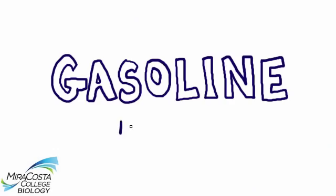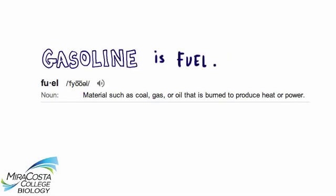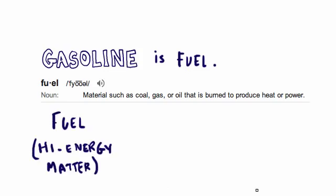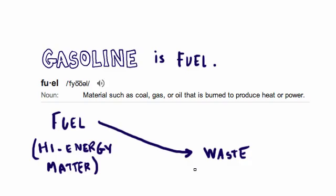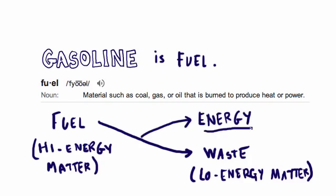If your answer to my question was fuel, give yourself a gold star. A fuel like gasoline is a material substance, not energy, but it would be accurate to say that gasoline is a substance that represents a great deal of chemical energy potential. When we use substances like gasoline for fuel, we're taking advantage of the way energy gets released when high energy potential substances are converted into low energy potential substances, which we usually call waste molecules.